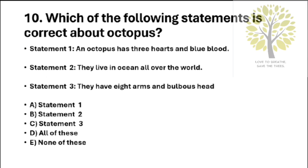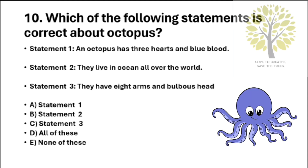Question number 10: Which of the following statements is correct about octopus? Statement 1: An octopus has three hearts and blue blood. Statement 2: They live in ocean all over the world. Statement 3: They have eight arms and a bulbous head. Option A: Statement 1. Option B: Statement 2. Option C: Statement 3. Option D: All of these. Option E: None of these. The answer is Option D, All of these.